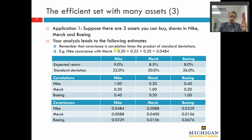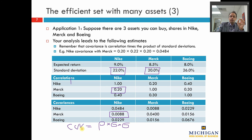Recall that covariances are just the correlation coefficient times the standard deviation of each individual asset. For example, take Nike with Merck: the covariance of 0.0088 is equal to the correlation coefficient of 0.2 for Nike and Merck, times the 22% standard deviation for Nike, and the 20% standard deviation for Merck. So covariance — COV — is equal to correlation (the Greek letter rho) times standard deviation (sigma) times another standard deviation (sigma). The covariance between Nike and Merck equals their correlation times the standard deviation for Nike times the standard deviation for Merck.